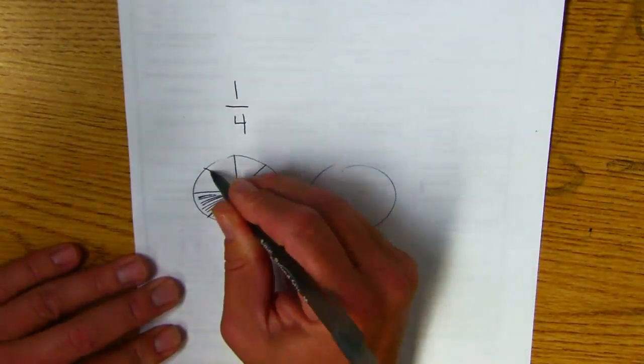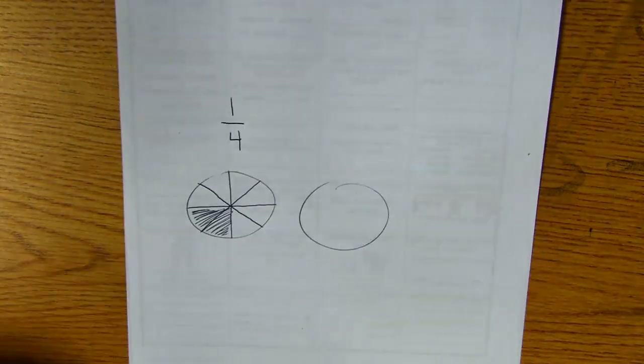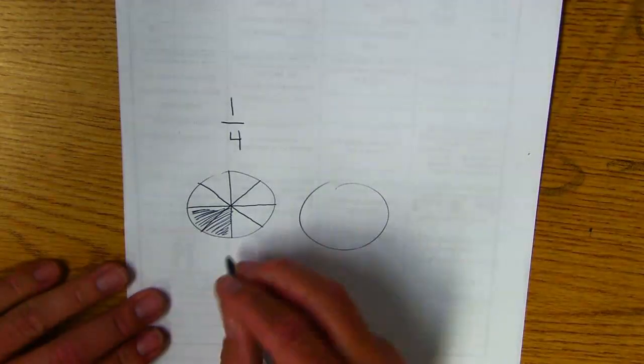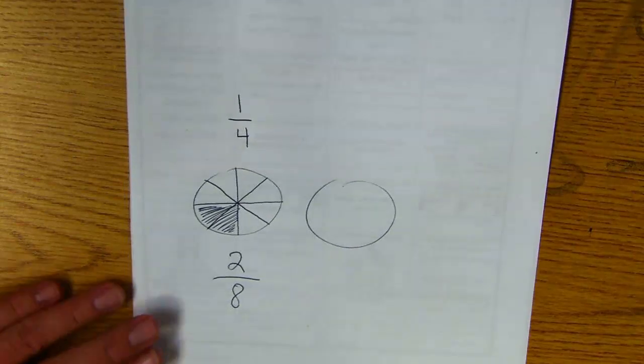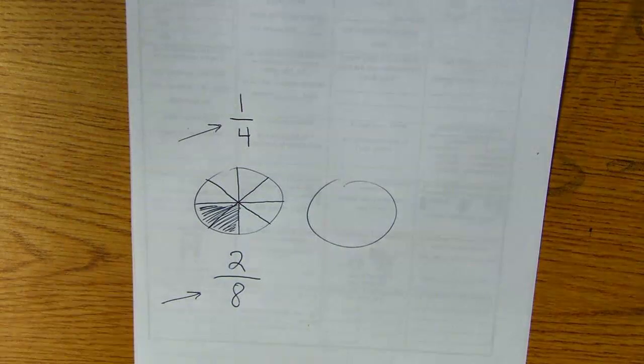Have I added any pizza? No, all I've done is add cuts. I've made more cuts to it. Now what do I have? I have two out of eight. So there's a clear example of why one fourth and two eighths are the same. You're not making any more pizza, you're just adding cuts.